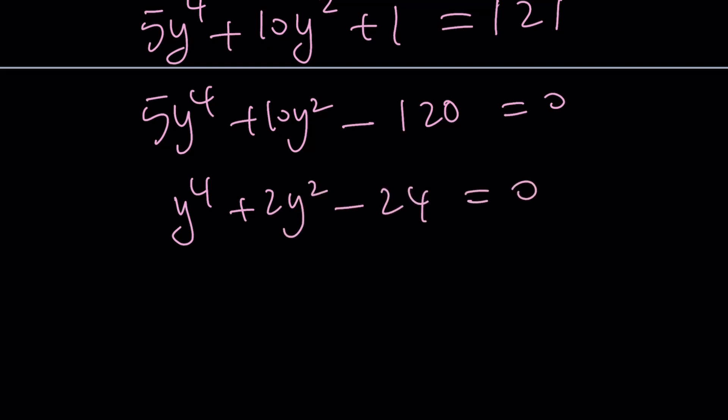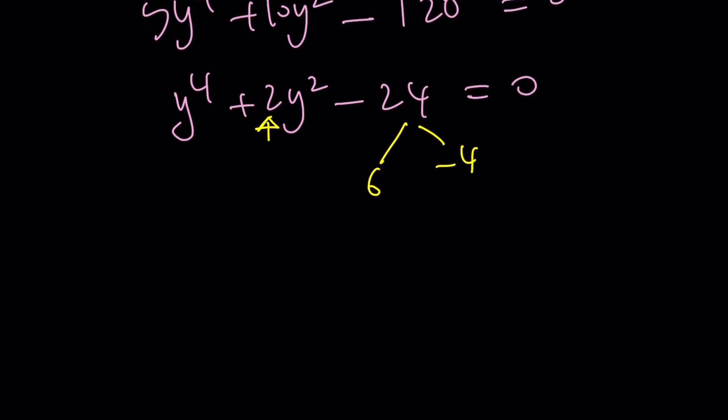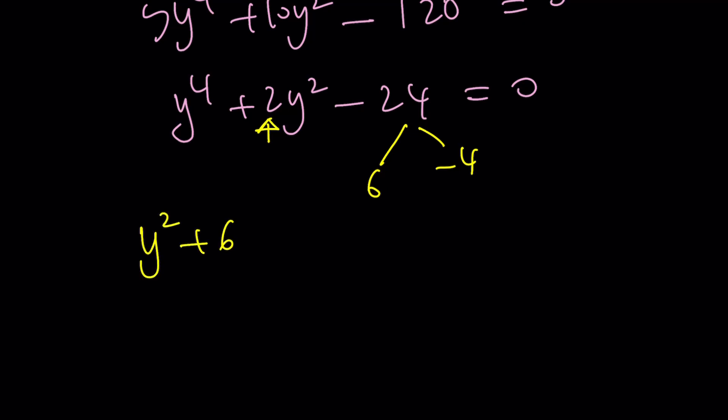So, I kind of need to factor negative 24. This is factorable. Notice that I can think of two numbers whose product is negative 24 and whose sum is 2. Those numbers are 6 and negative 4. Notice that 6 has to be the opposite. I mean, the bigger one. The positive one needs to be bigger to get a positive sum. So, from here, we get (y^2 + 6)(y^2 - 4).